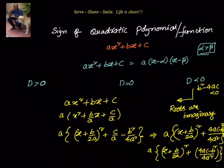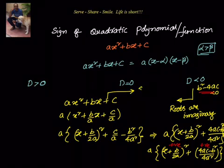Now, we know that (x + b/(2a))² is always positive, and since b² − 4ac is less than zero, that means 4ac − b² is positive. So positive plus positive is positive. Therefore the sign of ax² + bx + c in this scenario is equal to the sign of the coefficient of x² term, a.